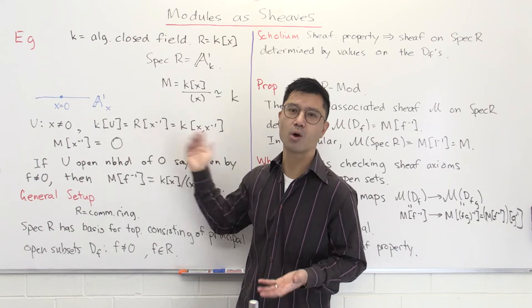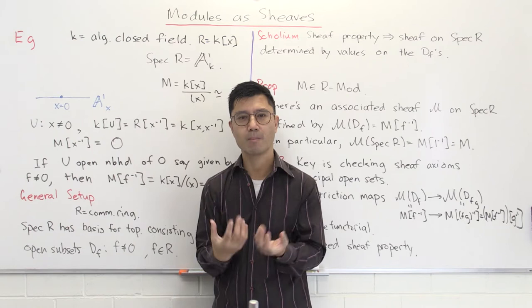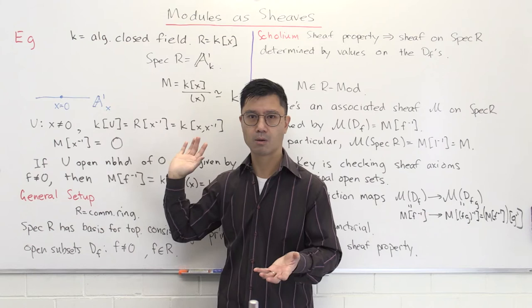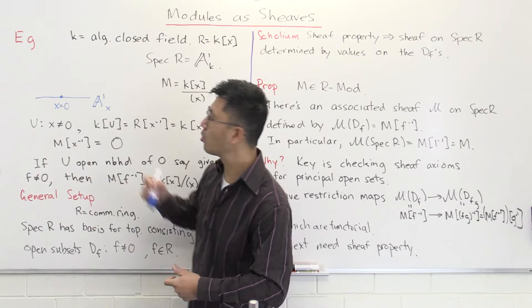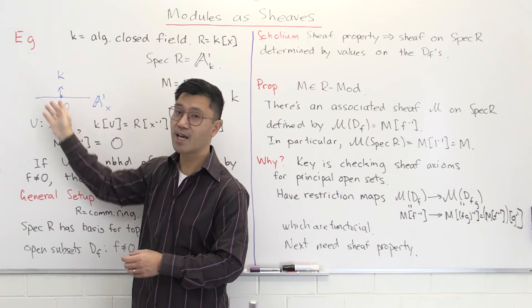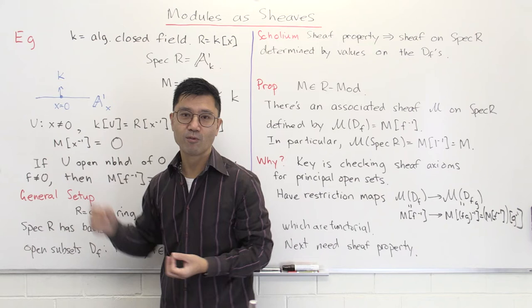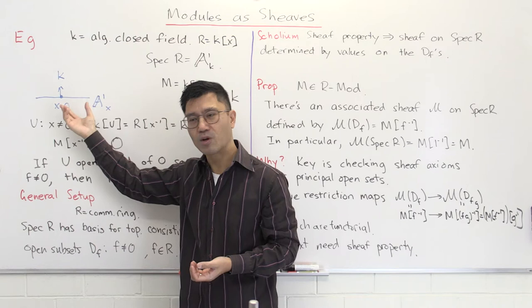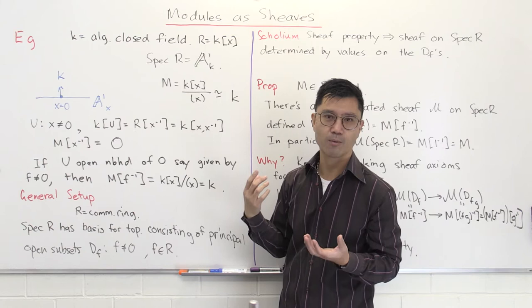Geometrically, we think of the module as sitting on this affine line. Away from x equals zero, it's just zero, but right at this point it's going to be a copy of k — we imagine a little copy of k sitting above that point. An open set containing zero will have sections equal to k; if it doesn't contain zero, sections will be zero. This is an example of what's called a skyscraper sheaf in algebraic geometry — a very important object that illustrates the geometric understanding of this module.